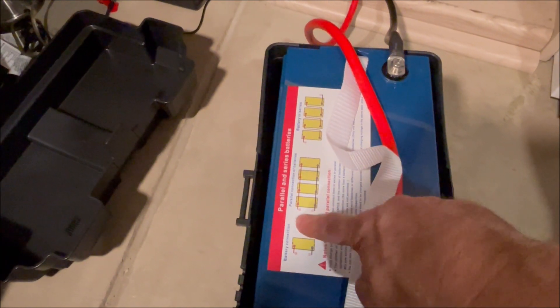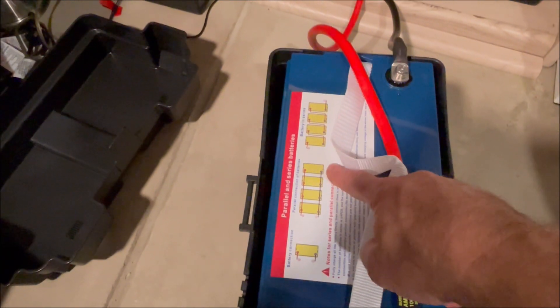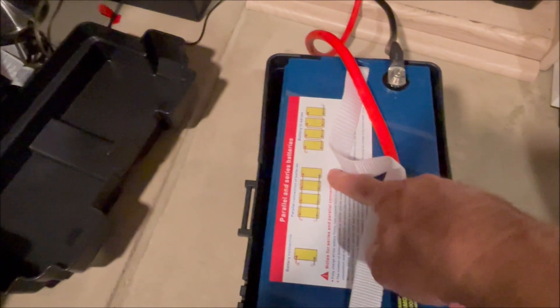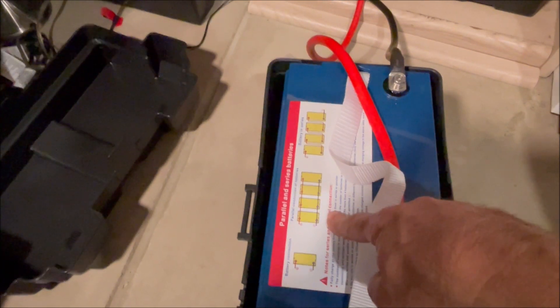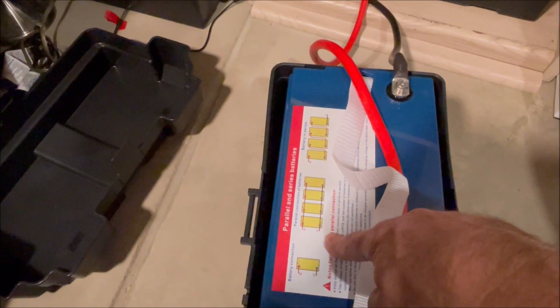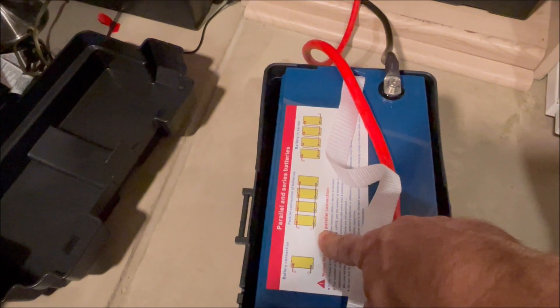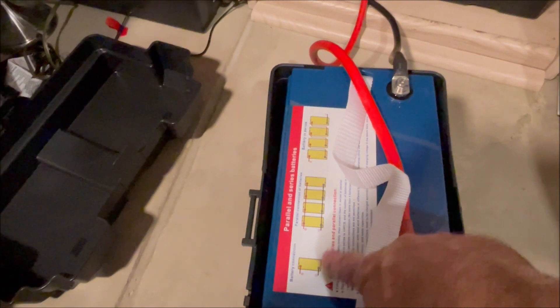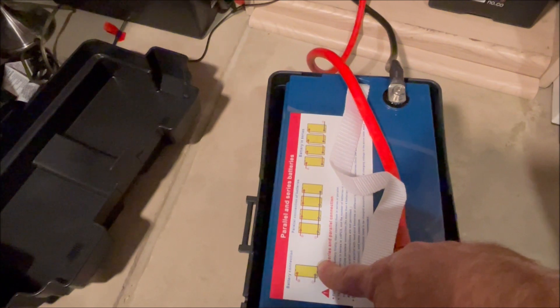So if we have a short down here somewhere with four batteries, we would output up to 800 amps before these BMSs would shut down. But if we added a fifth battery, now we're up to 1000 amps. Six battery, 1200 amps. Seventh battery, 1400 amps, and so on.